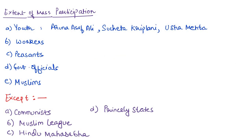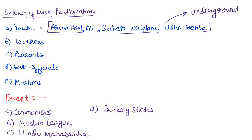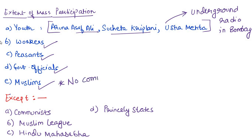Mass participation was widespread. The youth — students of schools and colleges — participated in large numbers. Women, especially school and college girls like Aruna Asaf Ali, Sucheta Kriplani, and Usha Mehta, also participated. Usha Mehta started an underground radio in Bombay during the Quit India Movement — an important point for Prelims. Workers, peasants, Indian government officials, and Muslims also participated, and amazingly there were no communal clashes.